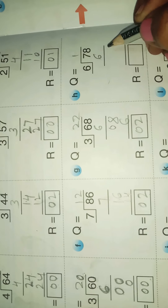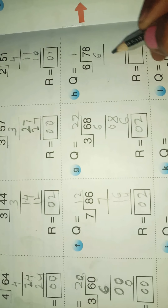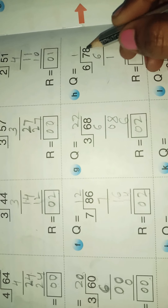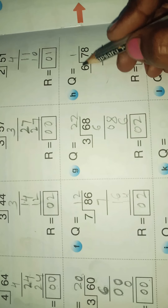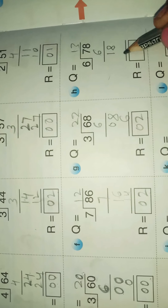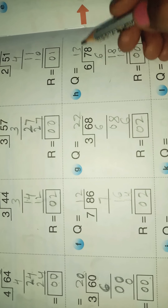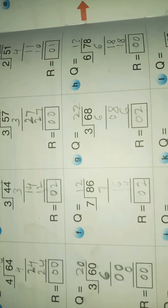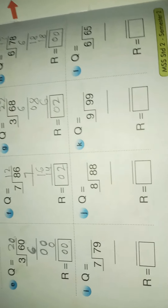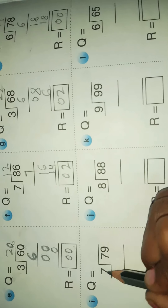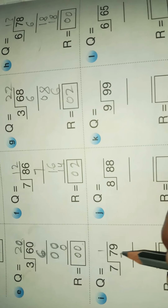Next example: 6 ones are 6, 7 minus 6 is 1. Bring down 8. 6 times 3 is 18, it becomes 0. The remainder is 0 and the quotient is 30. Next: 7 ones are 7, 7 minus 6 is 1. Bring down 8. 7 goes into 18.